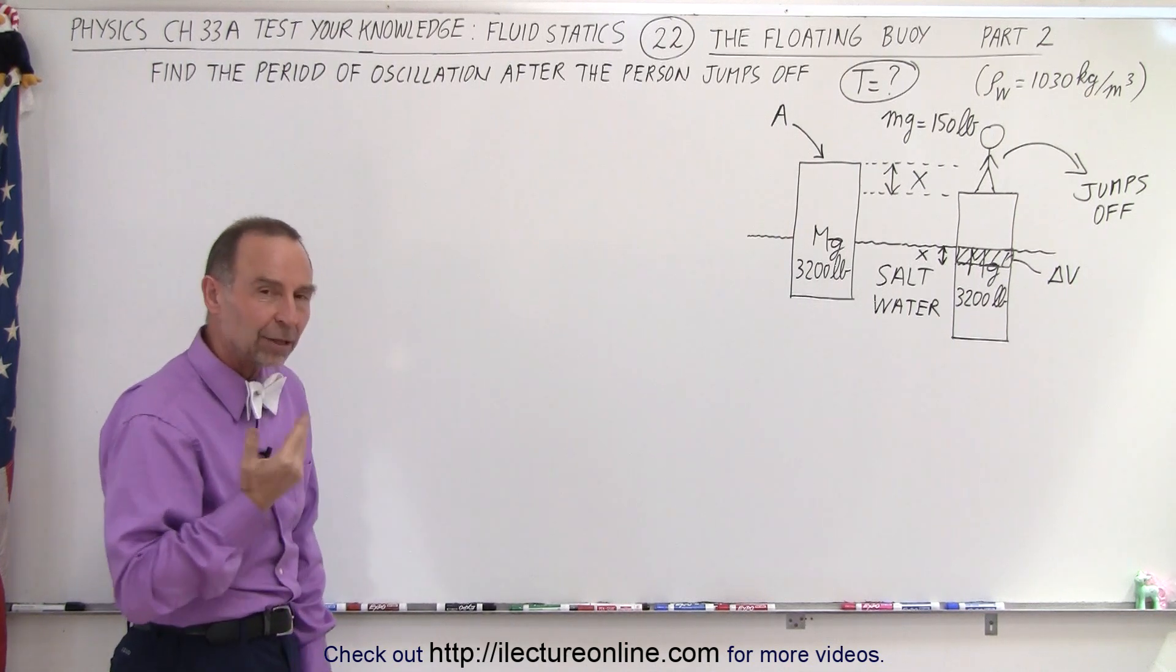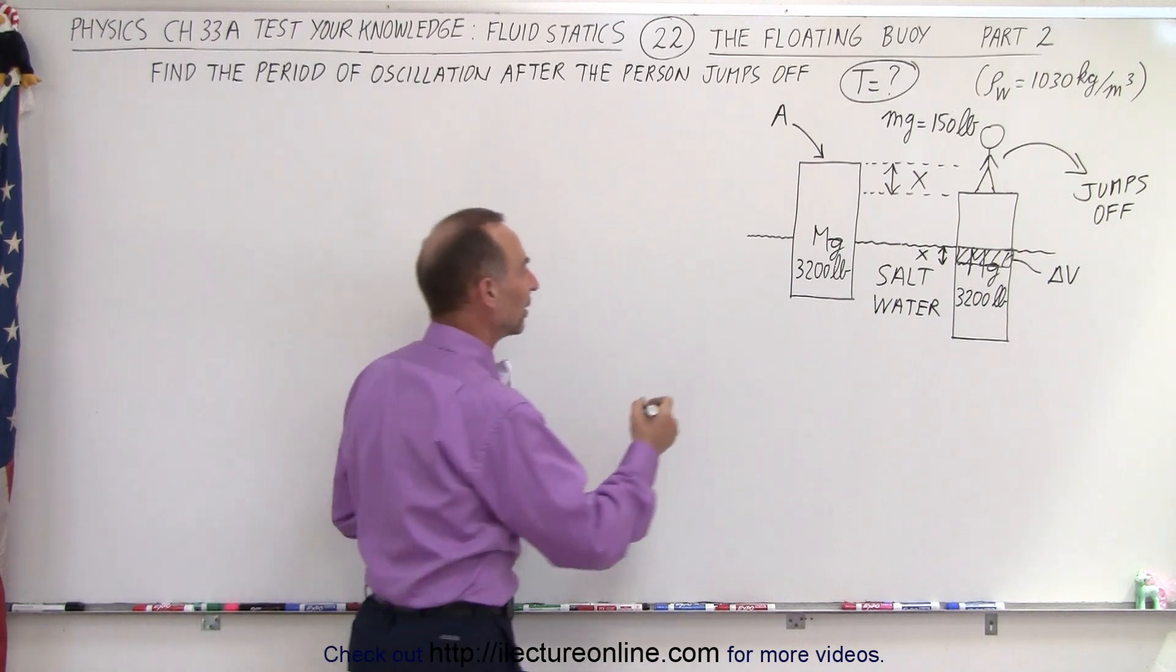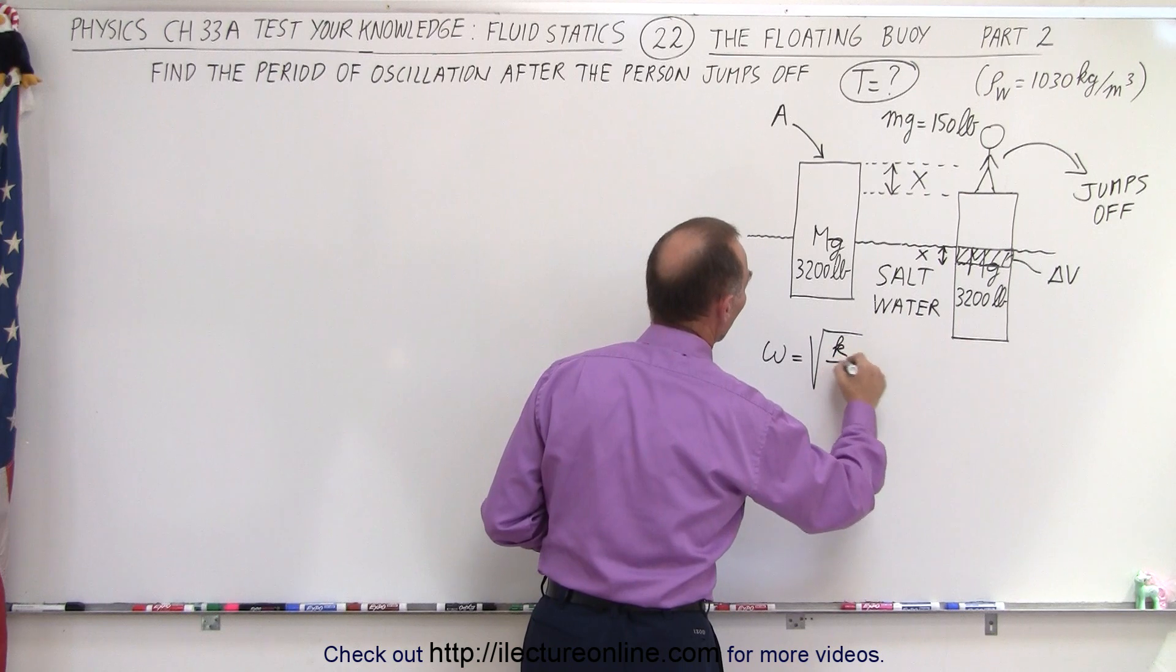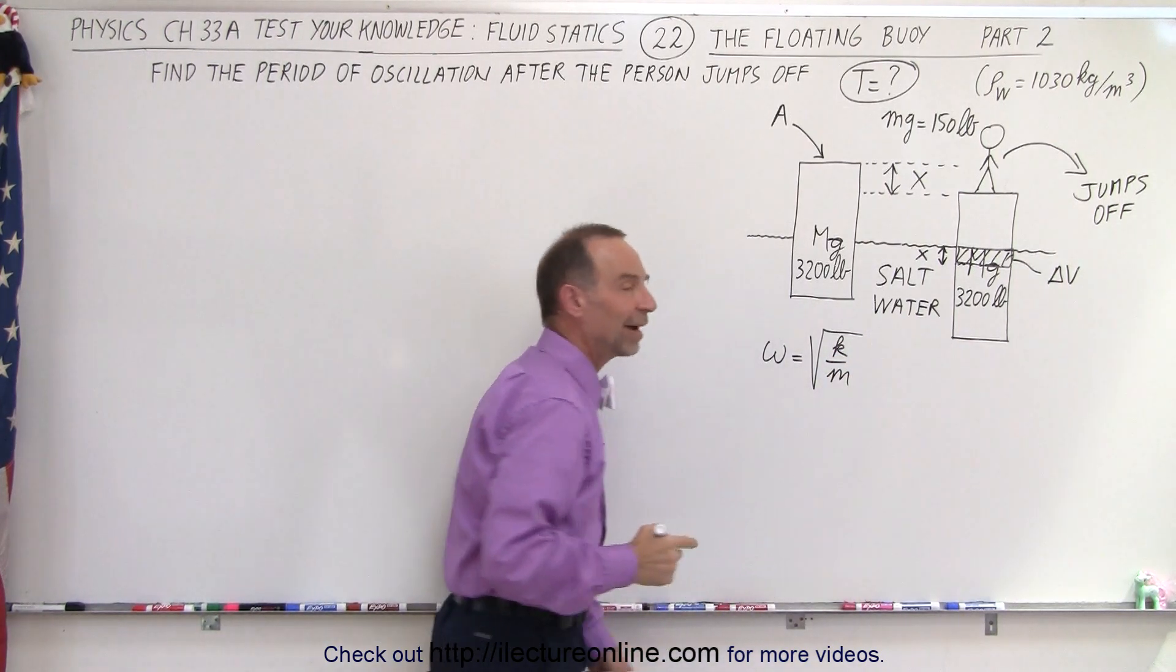When we think about simple harmonic motion, we think about the angular frequency, and we know that the angular frequency omega is equal to the square root of k over m, which means we need to find k and we need to find m.